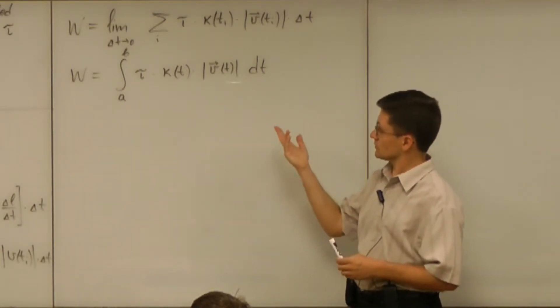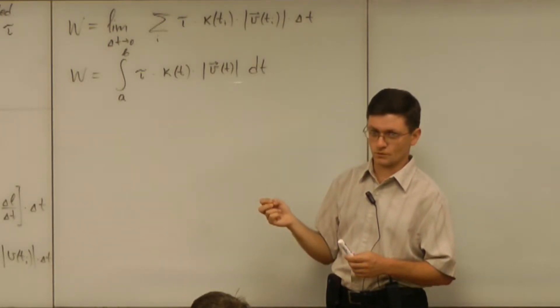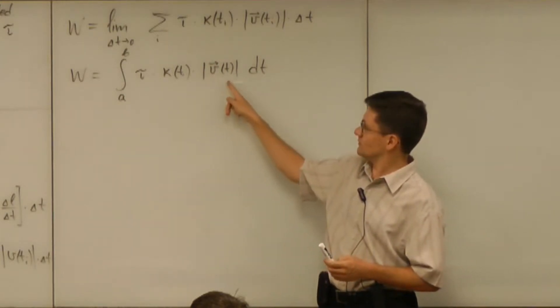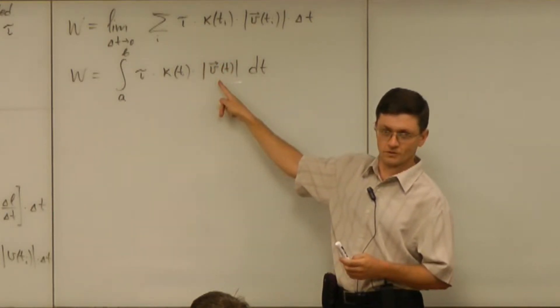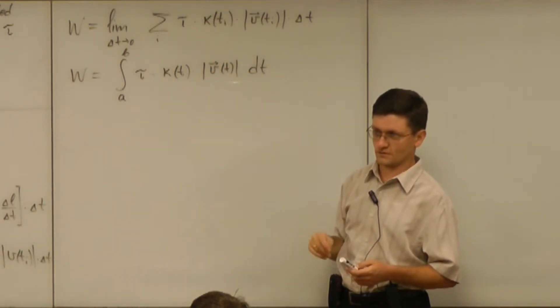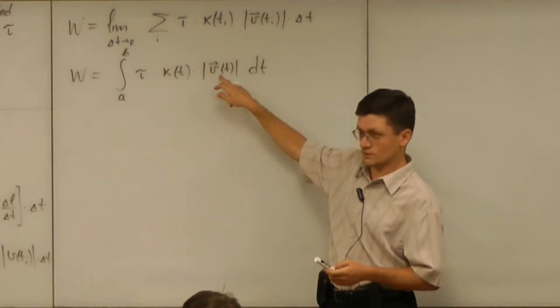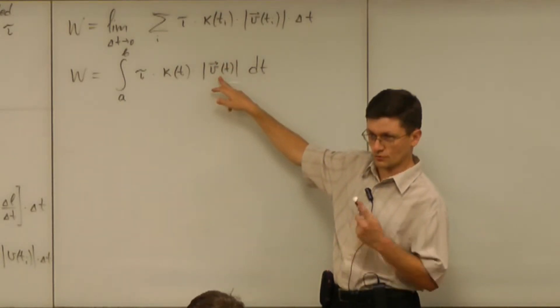Sometimes people prefer to parameterize in a special way. Can you guess what the special way would be? The special way would be to make this equal to one, so that this term doesn't even show up in the picture. And that means that the speed of your parameterization should be one.